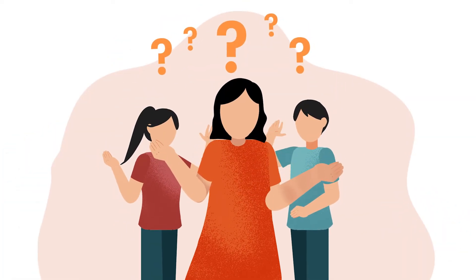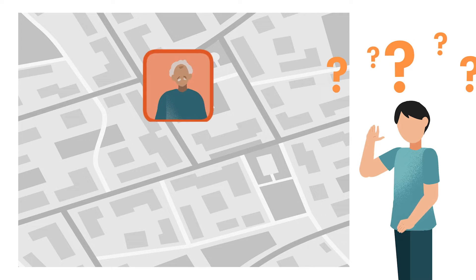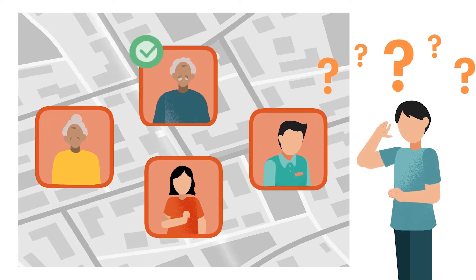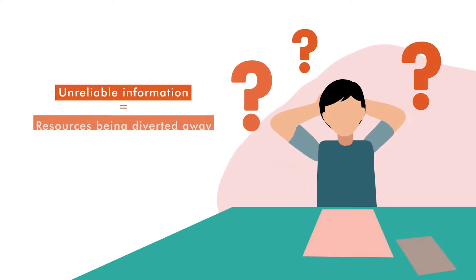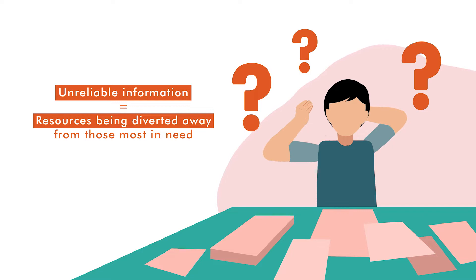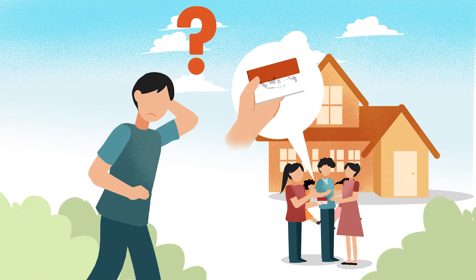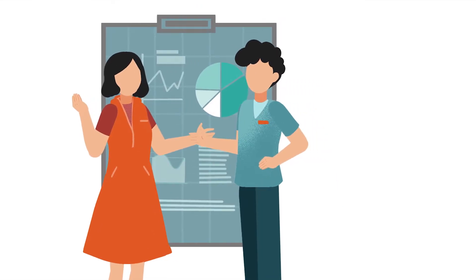However, did you know that correctly identifying who should receive assistance is not as straightforward as it seems? Especially in lower-income countries, it is hard to identify who the poorest households are, since a large portion of individuals work in the informal sectors where verifiable income records are lacking. Using unreliable information to decide who should receive assistance can result in resources being diverted away from those most in need.